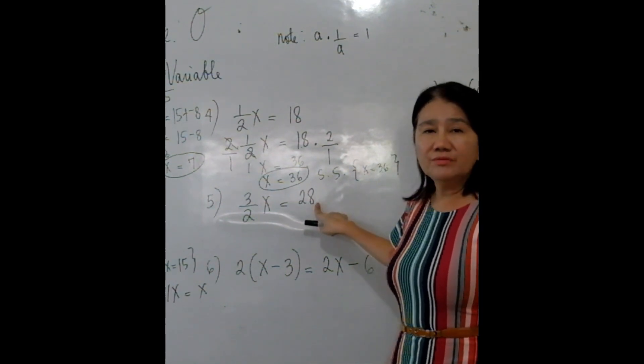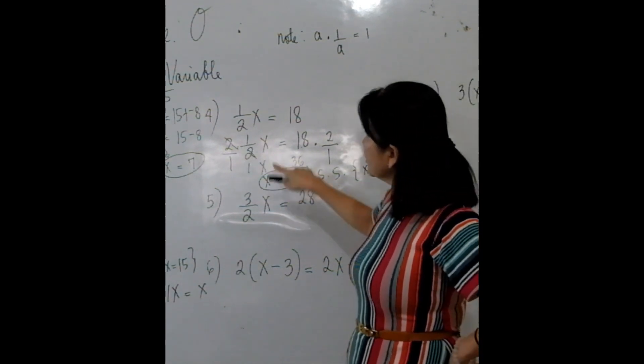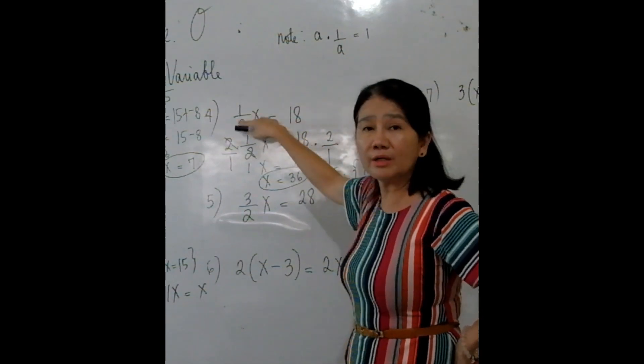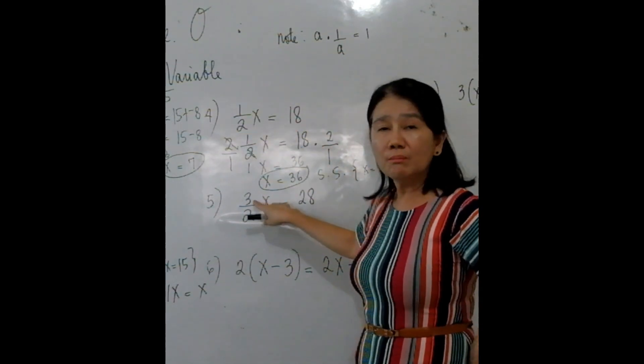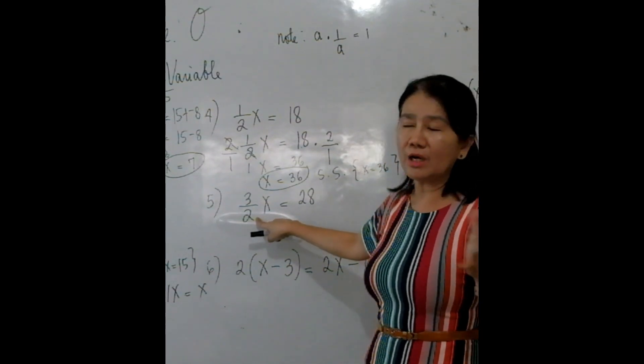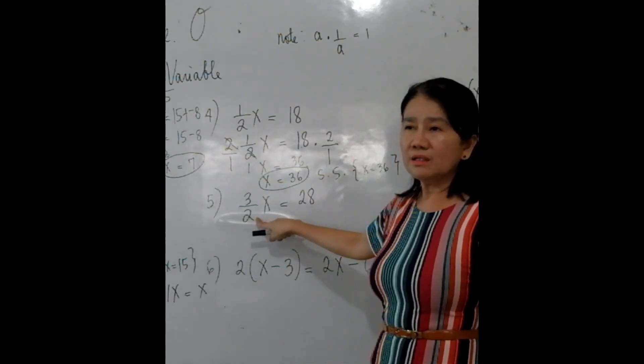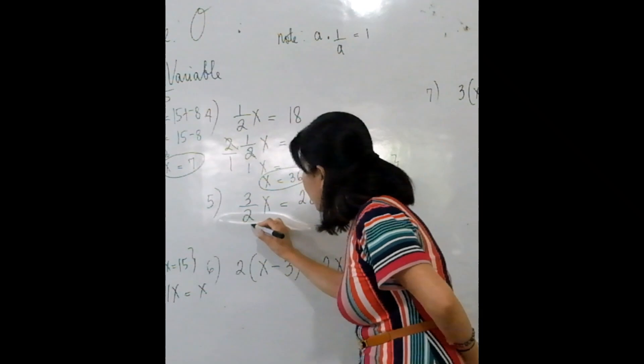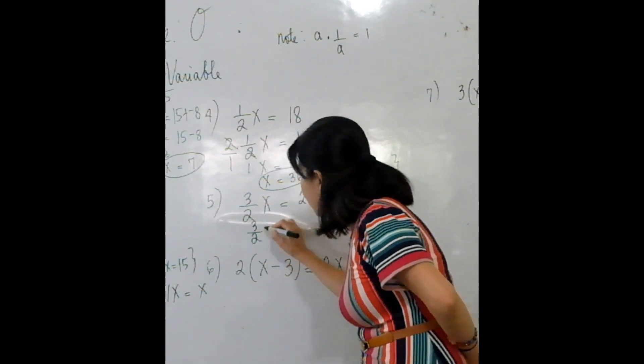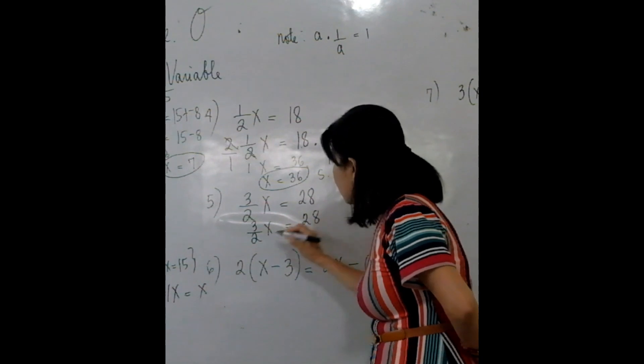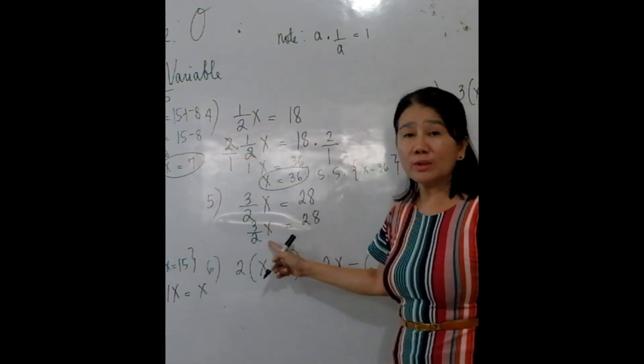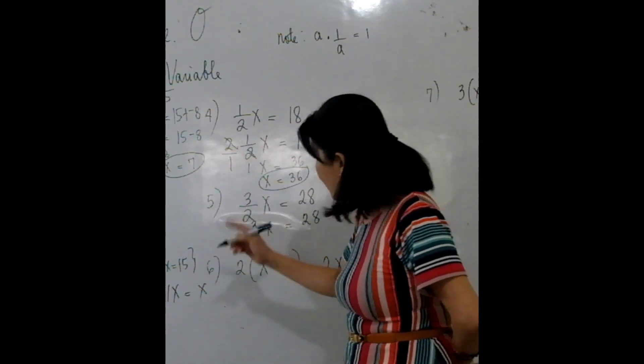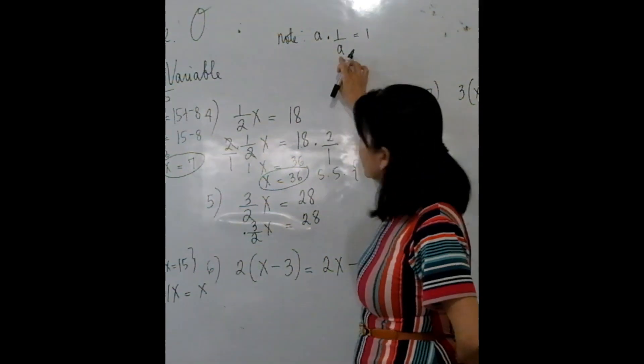Problem number 5 is similar to problem number 4. It's just that in number 4, my fraction is simpler, 1 half. This time I made it more complicated. In the cases of students, 3 halves is a complicated number. So what do we multiply to 3 halves to isolate X? Or what do we multiply to 3 halves so that 3 halves times that number will become 1?